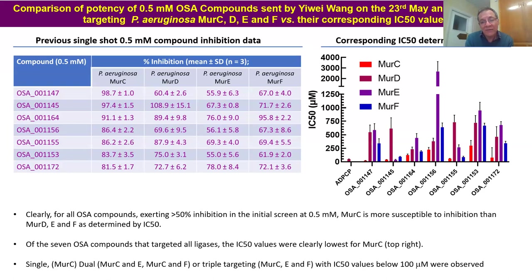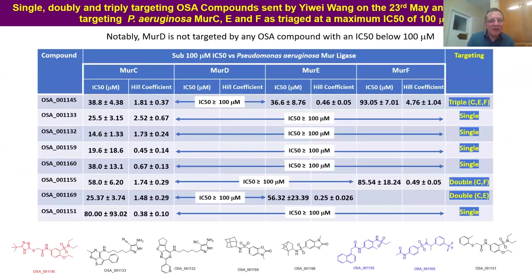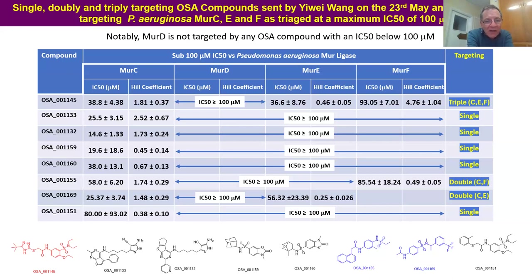To use it as a launch pad for developing multi-targeting inhibitors — my feeling is that might be a bit of an ask. However, if we restrict ourselves to molecules that may target two or three or even one, and we say we're not interested in anything with an IC50 greater than 100 micromolar — OSA 1145 triply targets, OSA 1155 doubly targets C and F, OSA 1169 targets C and E, and the remainder are single targets for MERC.